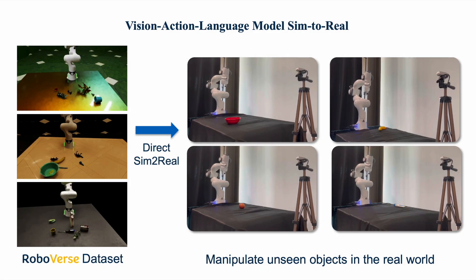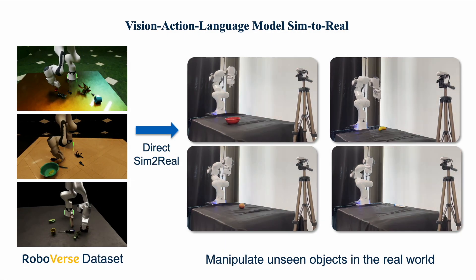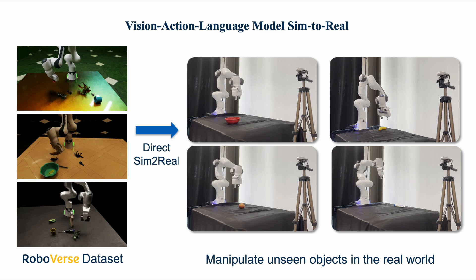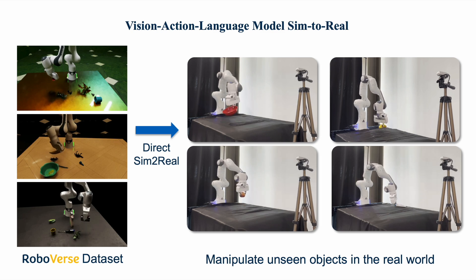Trained on the Roboverse dataset, the Vision Action Language model can directly transfer to the real world, enabling language-conditioned manipulation of entirely unseen objects in real-world settings.